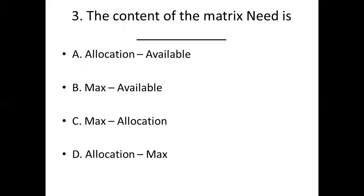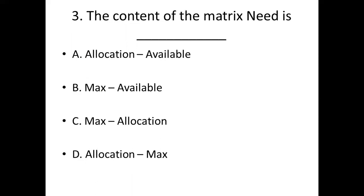Question 3: The content of the matrix need is dash. Option A: allocation available. Option B: max available. Option C: max allocation. Option D: allocation max. Answer: Option C, max allocation.